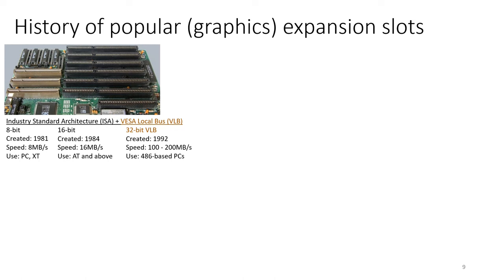I've brought some sample cards here. This is a SoundBlaster 16 - a 16-bit ISA slot card. Then there's a 32-bit VLB card. This here is a Multi-IO card - it's a hard disk controller, floppy controller, it has parallel and serial ports. In the past, people liked this card because you have to save slots - one slot can do many things. I'll pass it around so you can take a look.